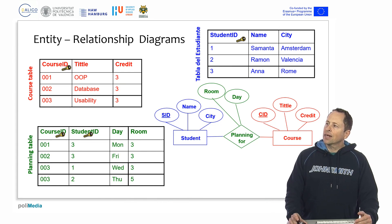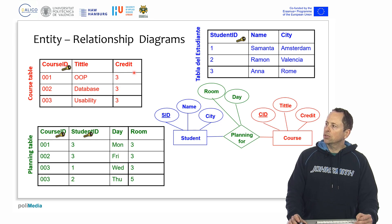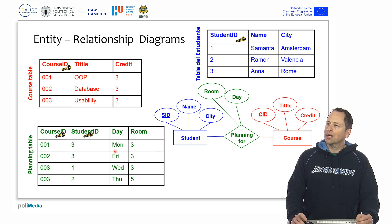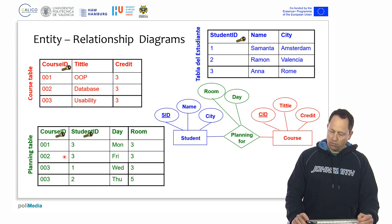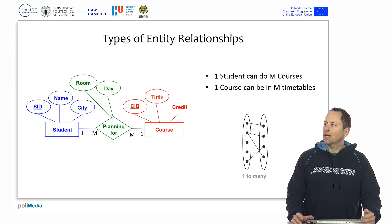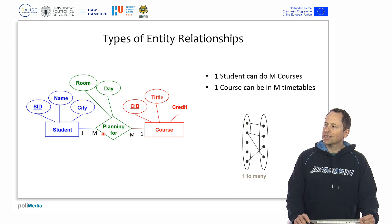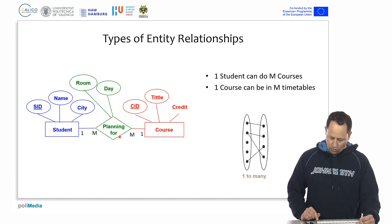Here we have another database with courses and students, where students have student IDs, a name, and a city. The primary key is the student ID. Courses have course IDs as the primary key, a title, and a number of credits. There is also a relationship table. Rather than adding a separate auto-incrementing relationship ID, the primary key here is composed of the two foreign keys — the course ID and student ID — so there cannot be a row with the same combination of course ID and student ID. A student can be in many courses and one course can be in many schedules. Using two one-to-many relationships through this intermediate table, we achieve a many-to-many relationship.